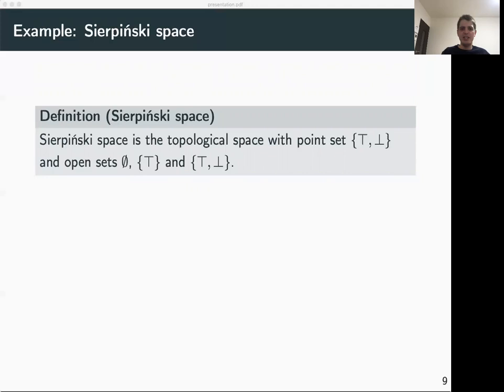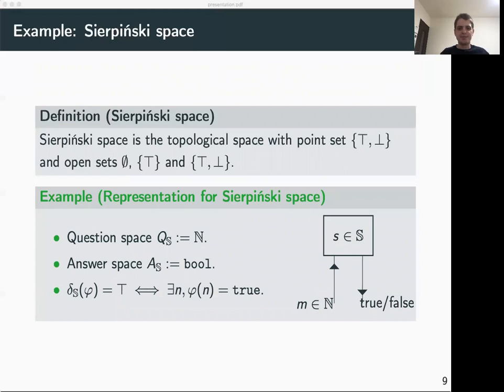We can define a representation of Sierpinski space that induces the same topology as follows. The questions are just the natural numbers and the answers are the Booleans, true or false. The name for an element of Sierpinski space is a function from the natural numbers to the Booleans: such a function is a name for top if and only if there exists a natural number n such that phi of n equals true, and the only name for bottom is the function that for all natural numbers always returns false.